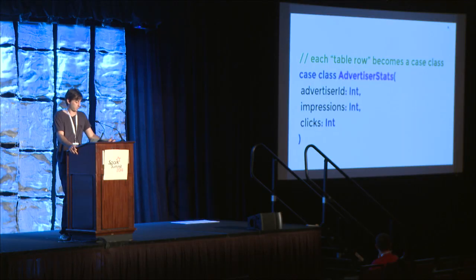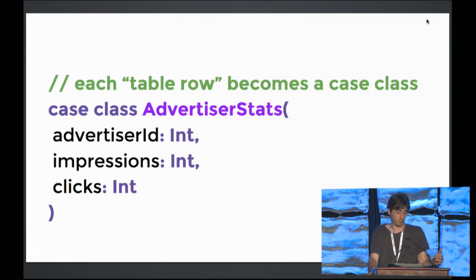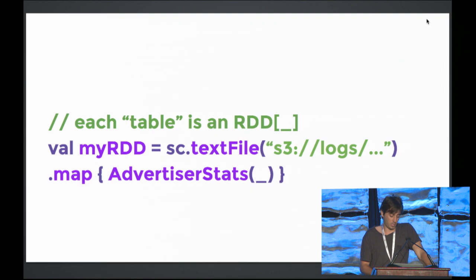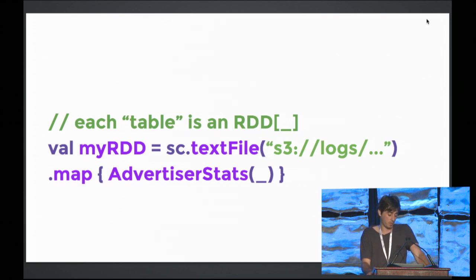For how we structure our data: if you're on Hive you have tables with rows; in Spark you have a case class for every table row. We use case classes because they're serializable by default, and Spark needs most classes to be serializable when distributing code across nodes. Each table becomes an RDD of that type. Since all our log files are in S3, we call the Spark context object to create an RDD of type String loaded from S3, then map each string line into an AdvertiserStat using an apply method on the case class that parses the string into fields.